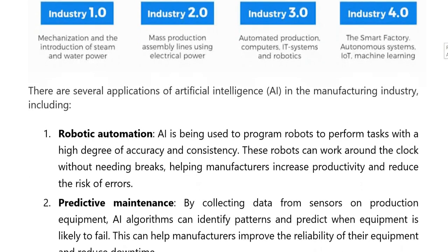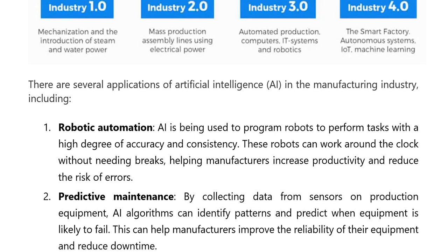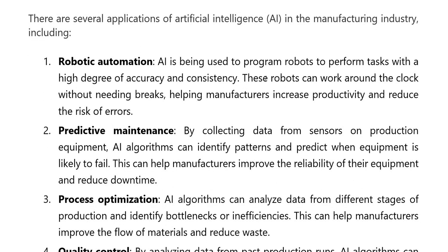Manufacturing industry mein AI ki several applications hain. First hai robotic automation. Artificial intelligence use hoti hai robots ko program karne ke liye, jo tasks perform karte hain high degree of accuracy aur consistency ke saath. Yeh robots work karte hain around the clock without needing breaks, helping manufacturers increase productivity aur reduce risk of errors.